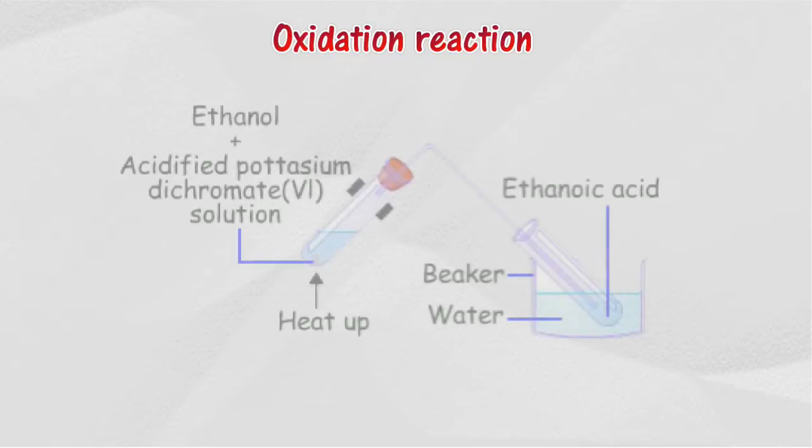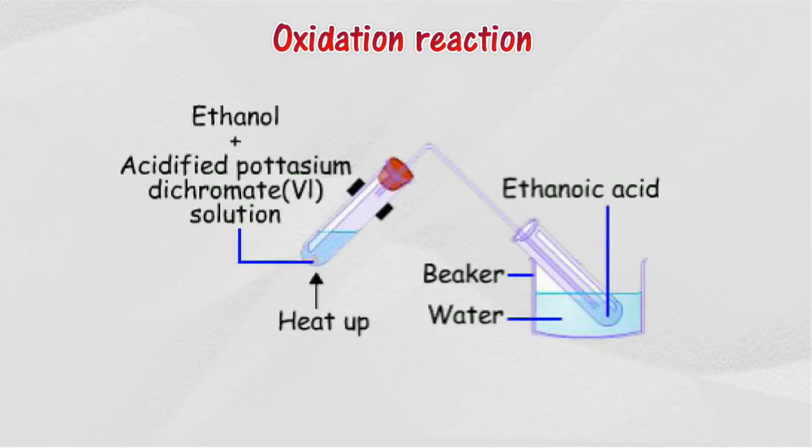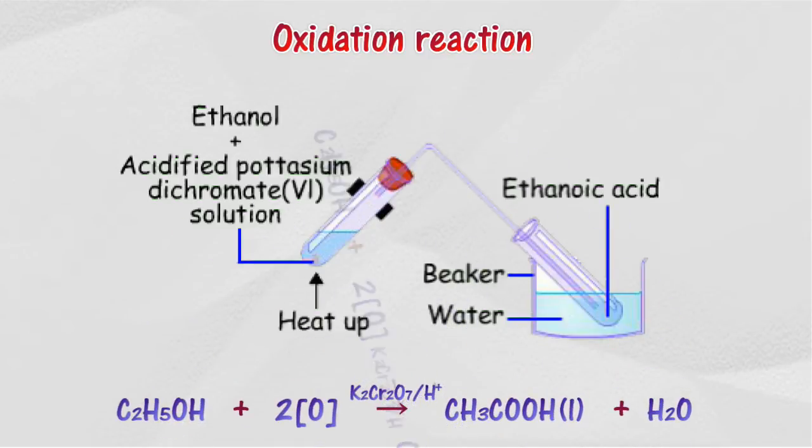Oxidation reaction. When ethanol is heated with acidified potassium dichromate(VI) solution, ethanol will be oxidized to ethanoic acid. The color of the acidified potassium dichromate(VI) solution changes from orange to green.